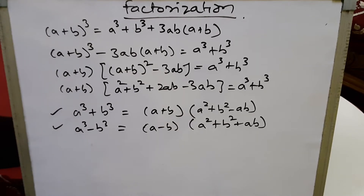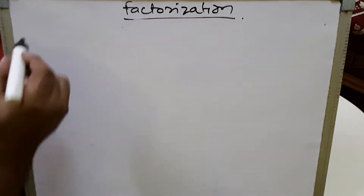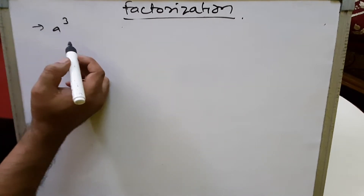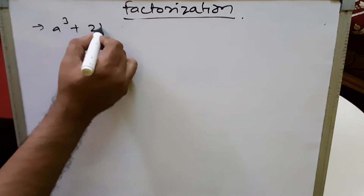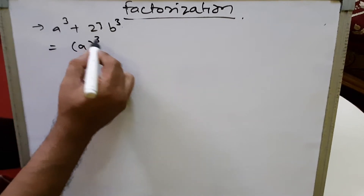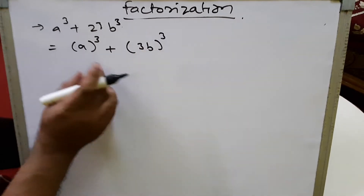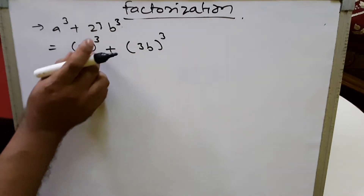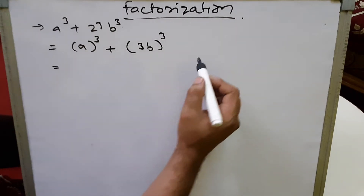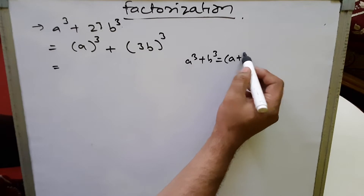Let's discuss a few sums. First, a simple one: a³ + 27b³. Here, a³ can be written as (a)³, and 27b³ can be written as (3b)³. So this becomes (a)³ + (3b)³.